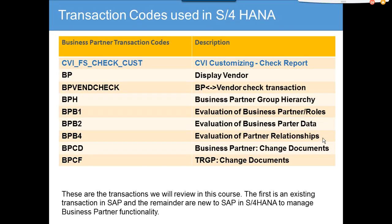We are going to discuss the transaction codes used in S4 HANA. The first important transaction code is CVI_FS_CHECK_CAST — this is the Customer Vendor Integration. It gives you a bunch of reports that you can use.